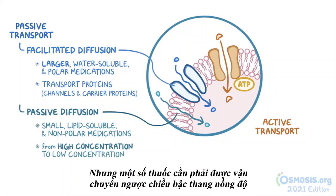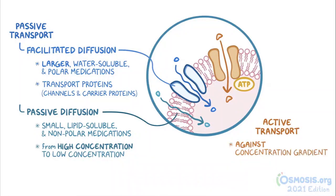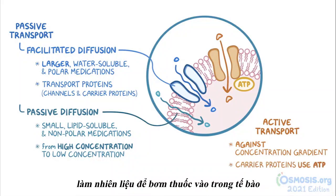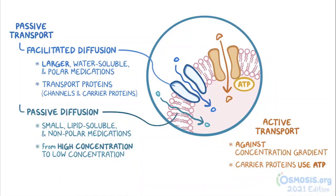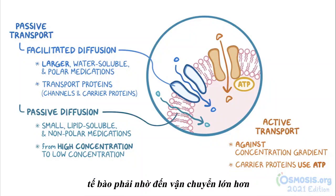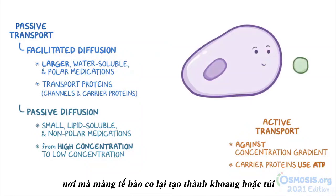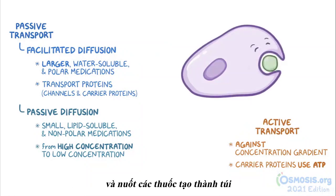Sometimes the medication needs to be transported against its concentration gradient. This involves specific carrier proteins that use ATP as fuel to pump medications into the cell. Sometimes medication molecules are so large that the cell resorts to bulk transport, also known as endocytosis, where the cell membrane invaginates and swallows up the medication, forming vesicles.